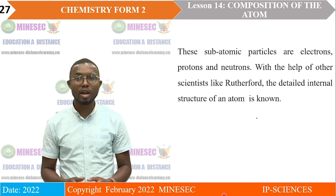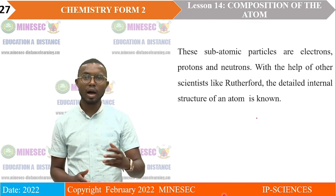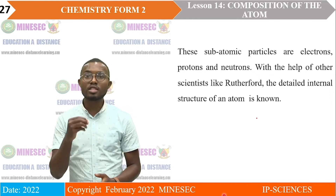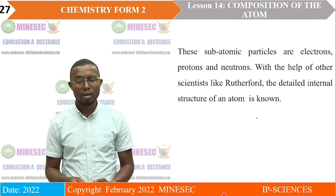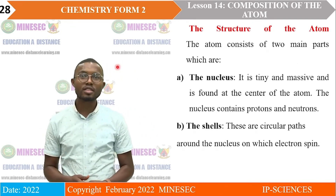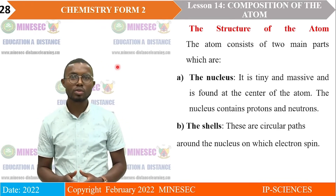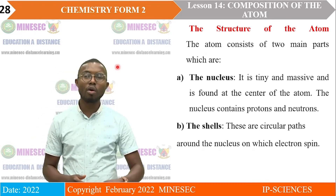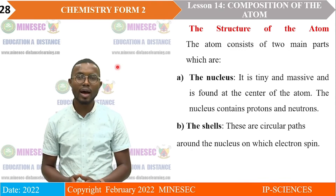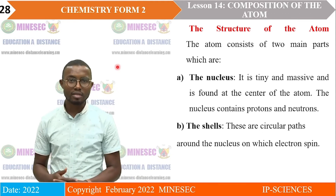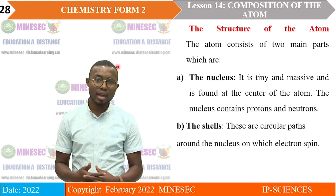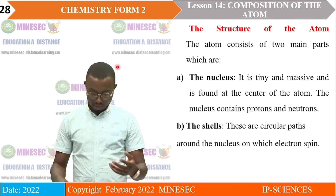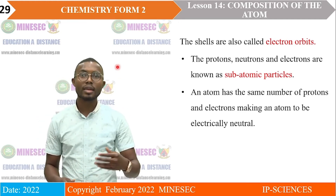The subatomic particles we are talking about are electrons, protons, and neutrons. With the help of scientists like Rutherford, the detailed internal structure of an atom was known. The atom consists of two main parts: the nucleus, which is the tiny and massive part found at the center of the atom and contains the protons and neutrons; and the shells, also called the orbit, which are circular paths around the nucleus on which the electrons are found.